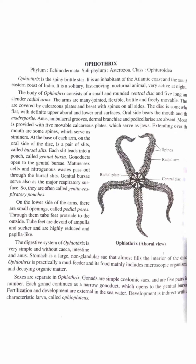The disc is somewhat flat with a definite upper aboral and lower oral surface. The oral side bears the mouth and madreporite. Ambulacral grooves, dermal branchiae and pedicellariae are absent. The mouth is provided with five movable calcareous plates which serve as jaws, with some spines which serve as strainers.